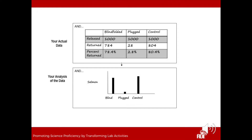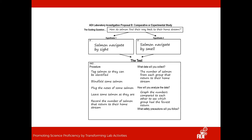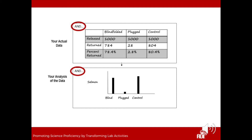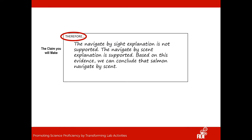Suppose our data looks like this: we released a thousand salmon in each group and saw nearly 800 from the blindfolded and control groups return, but far fewer from the plugged-nose group. We graph that data, and now we have an idea of what our actual data looks like. We compare it to our expected outcome: if salmon navigate by smell and I do this procedure, then my data should look like this. Therefore, the navigate-by-sight explanation is not supported, the navigate-by-scent explanation is supported, and we can conclude that salmon navigate by scent.